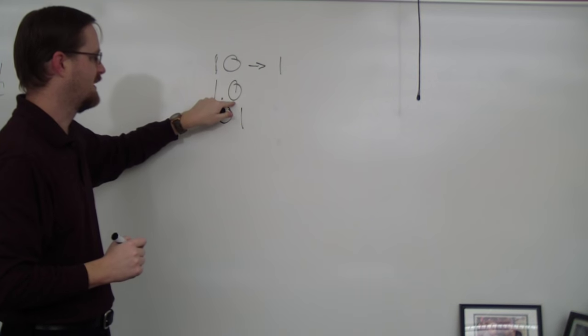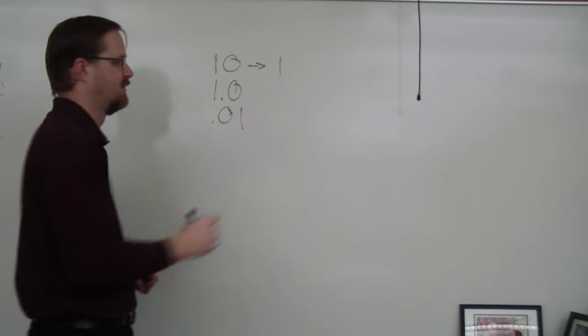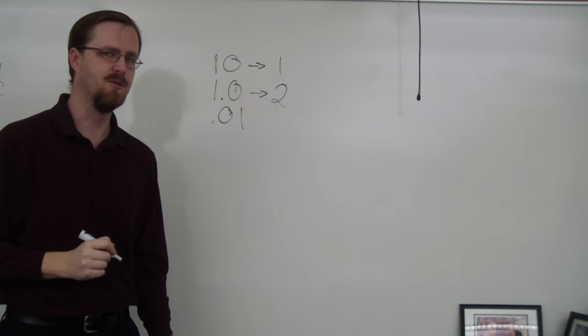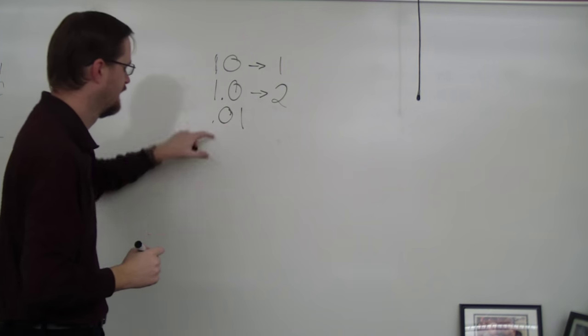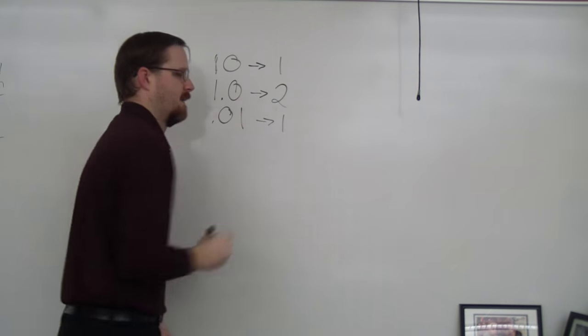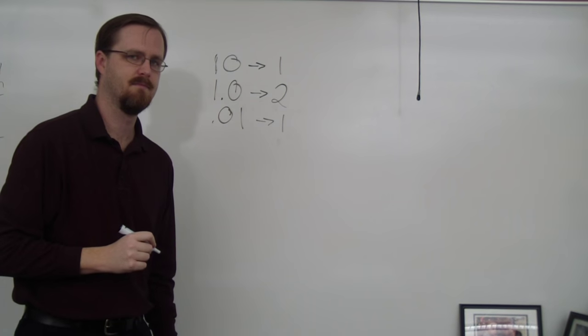Here, we have a trailing zero with a decimal. It now counts. There are two sig figs. This is a leading zero. It does not count. Only one.